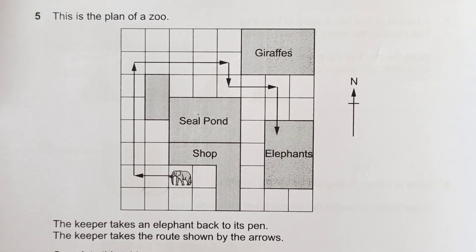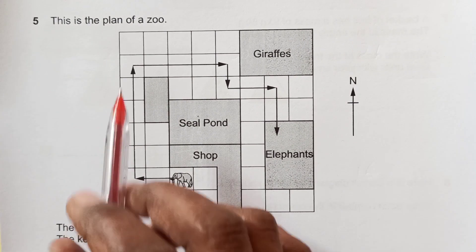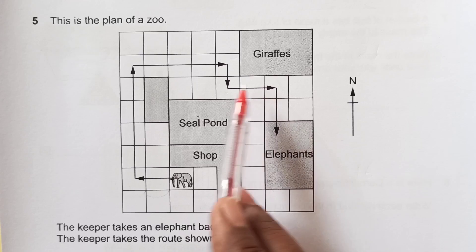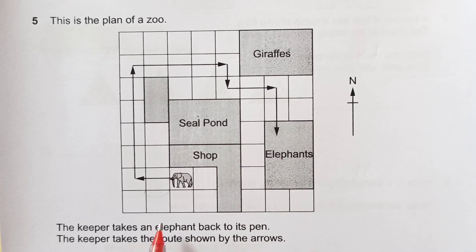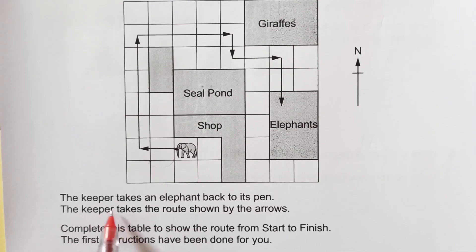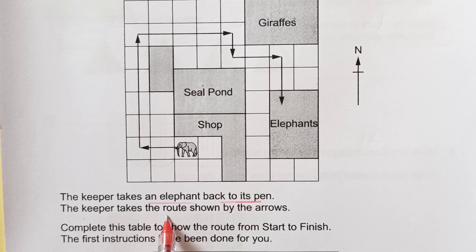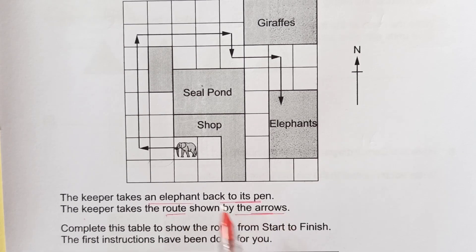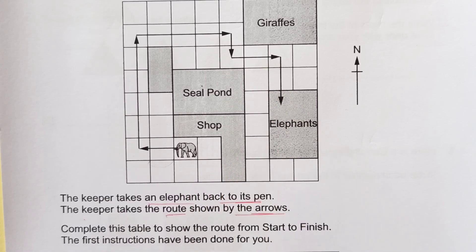Number 5. We have a beautiful diagram here. This is the plan of a zoo. You can see giraffes, elephant, seal pond, shop. The keeper takes an elephant back to its pen. The keeper takes the route shown by the arrows. So we need to follow this direction.